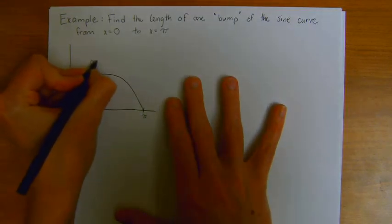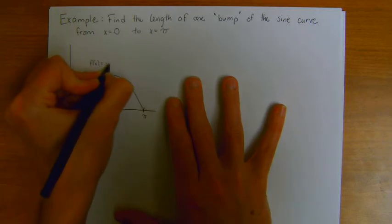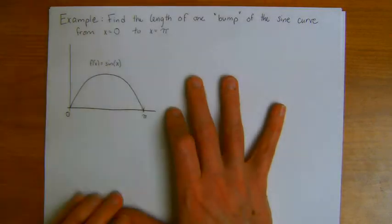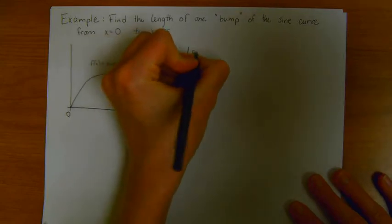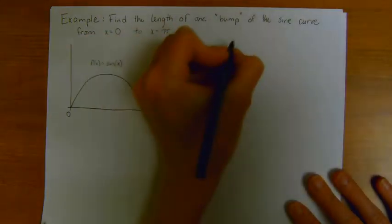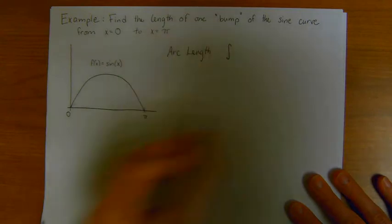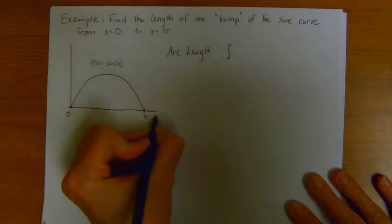Recall that the sine curve starts at 0, 0. It goes like this. Because it dips back down at pi. So my function in this case, f of x is equal to the sine of x.